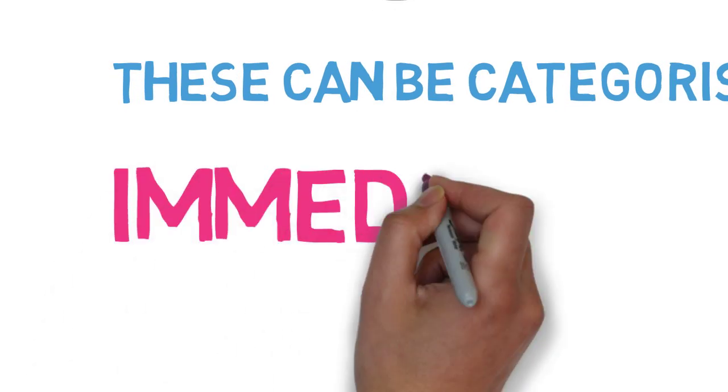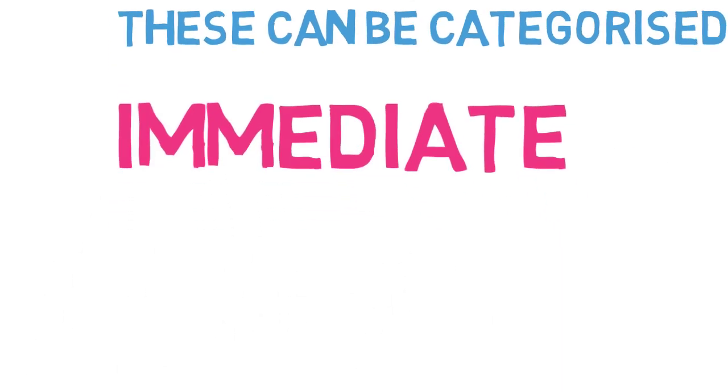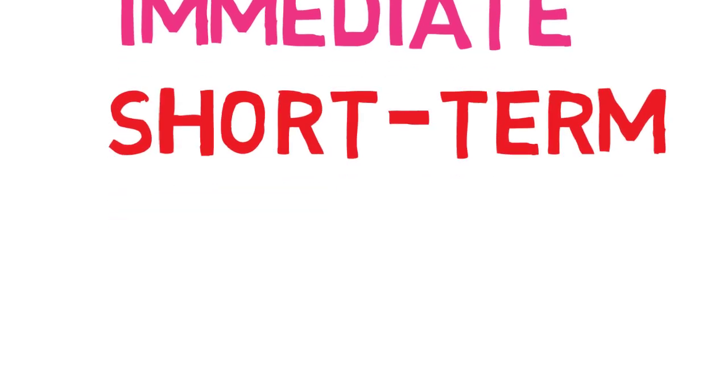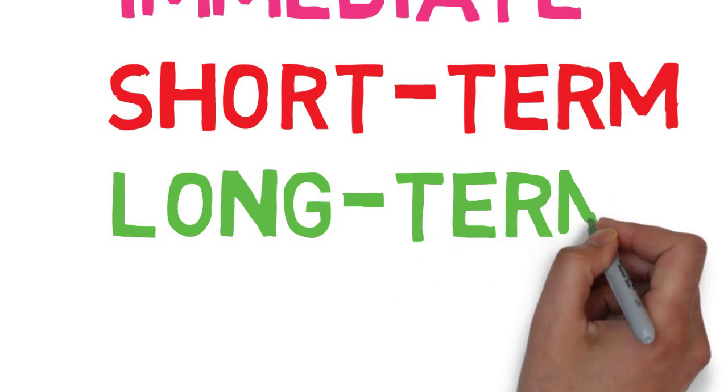To start with, you can characterize the effects of exercise in three ways: immediate effects, short-term effects, and long-term effects of exercise on the human body.